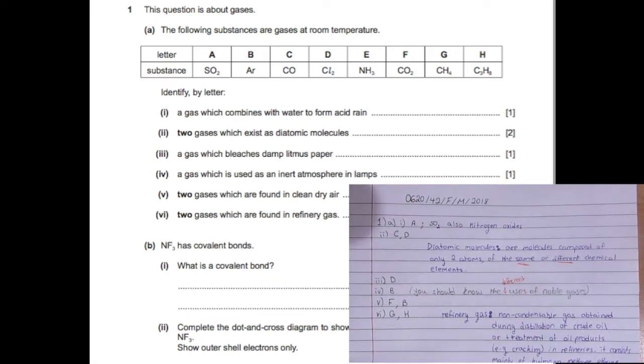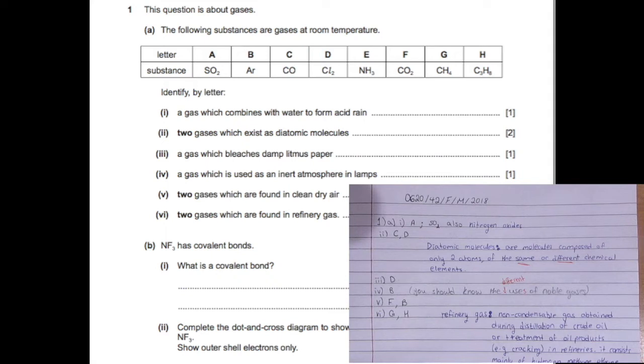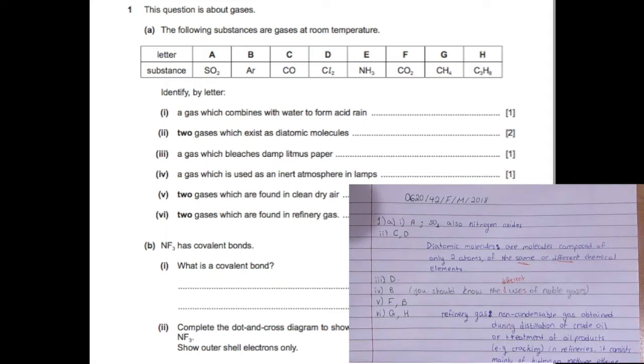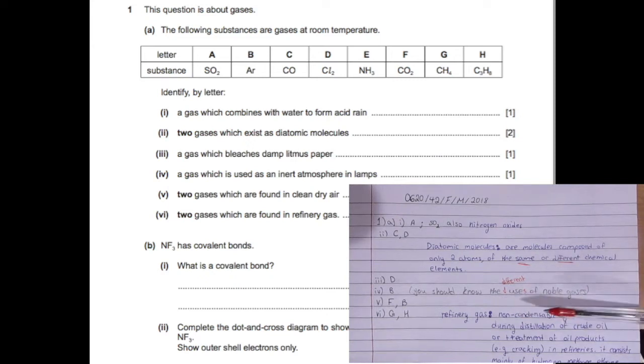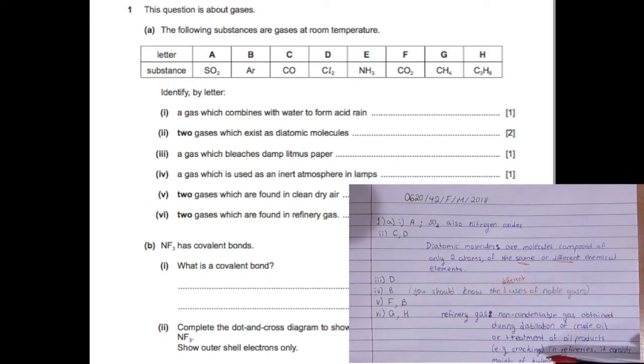Finally, two gases which are found in refinery gas, that is two hydrocarbons G and H. Refinery gas is a non-condensable gas obtained during distillation of crude oil, so basically in cracking, and it consists of hydrogen, methane, and olefins, which is just another name for alkenes.